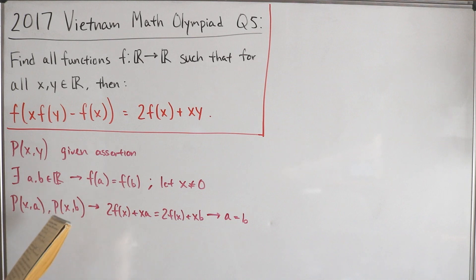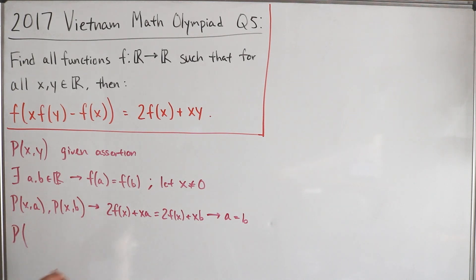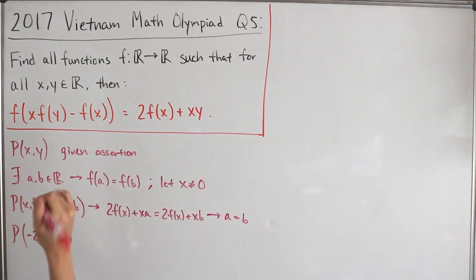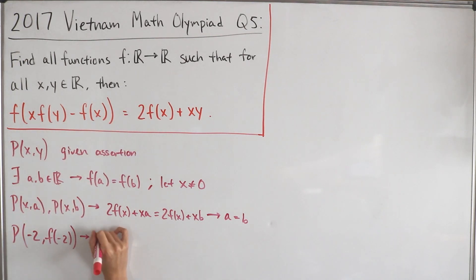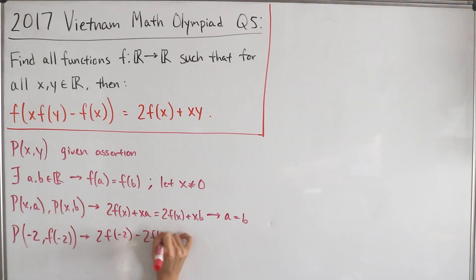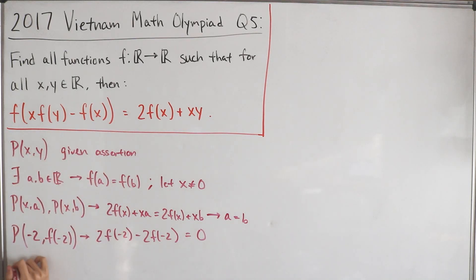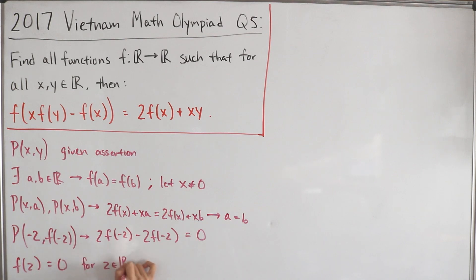Next, suppose we let x = -2 and y = f(-2) — using the surjection property. Plugging into the right-hand side: 2·f(-2) - 2·f(-2) = 0. Looking at the left-hand side with the same input, we call the result f(z), so f(z) = 0 for some real number z. We now need to determine what z is.